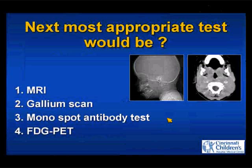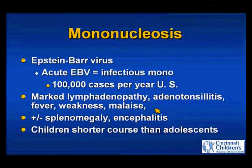And the answer is monospot. Mononucleosis — acute EBV is infectious mononucleosis. Lots of patients get this. I was always taught adolescents get it — the 13-year-old, the junior or high school patient. But we see a lot of young kids with mononucleosis, so it's something to think about even in that younger child.